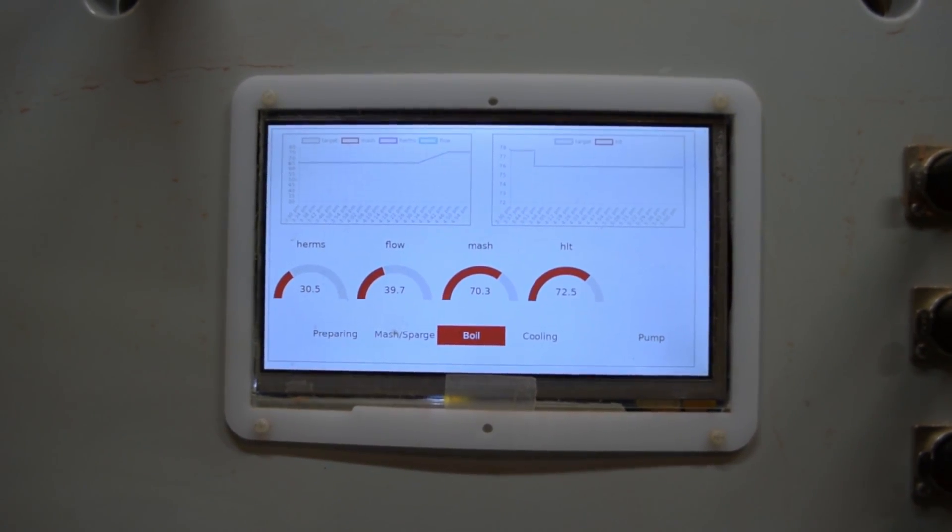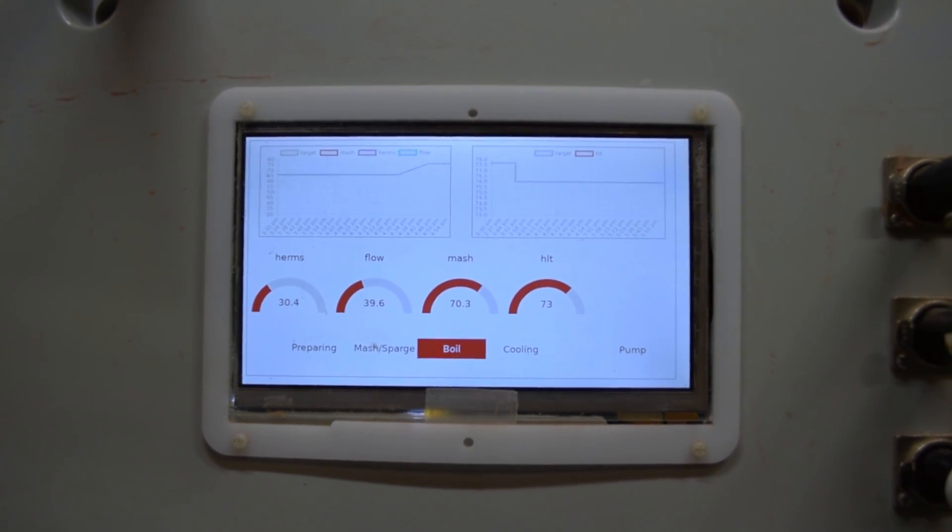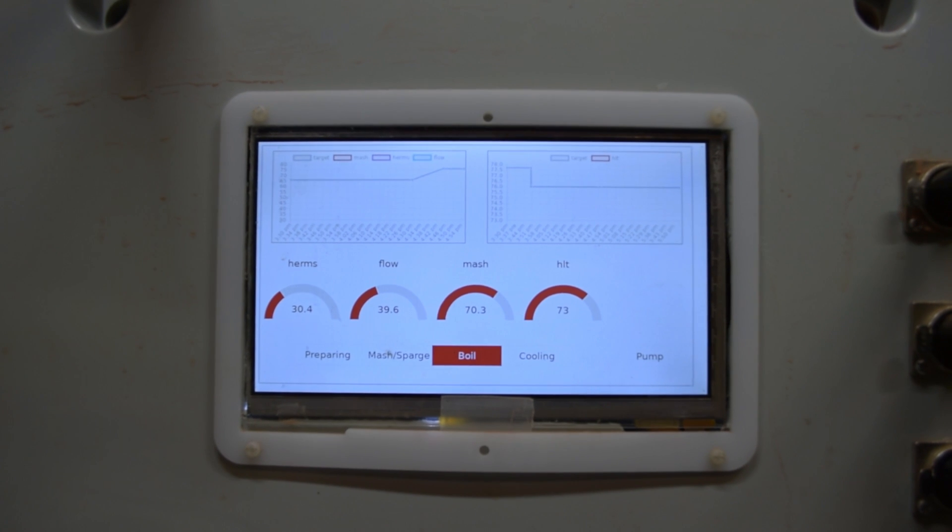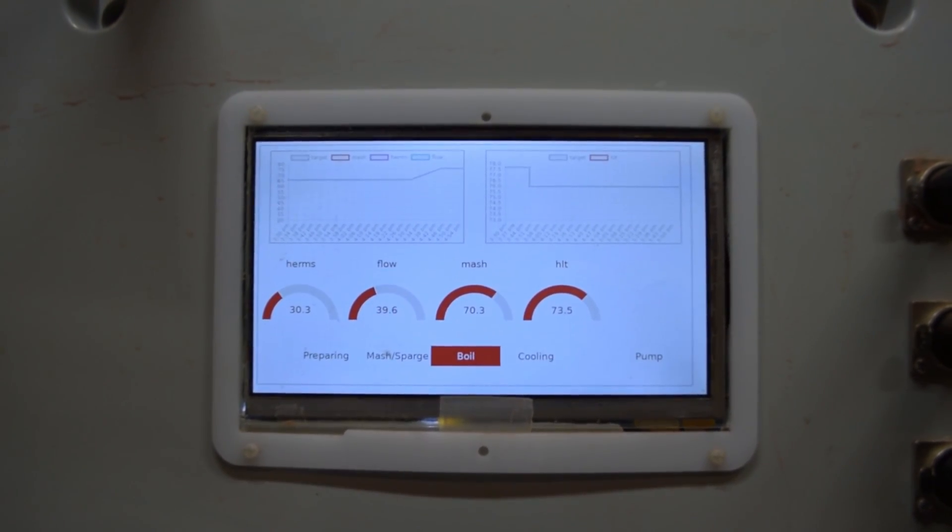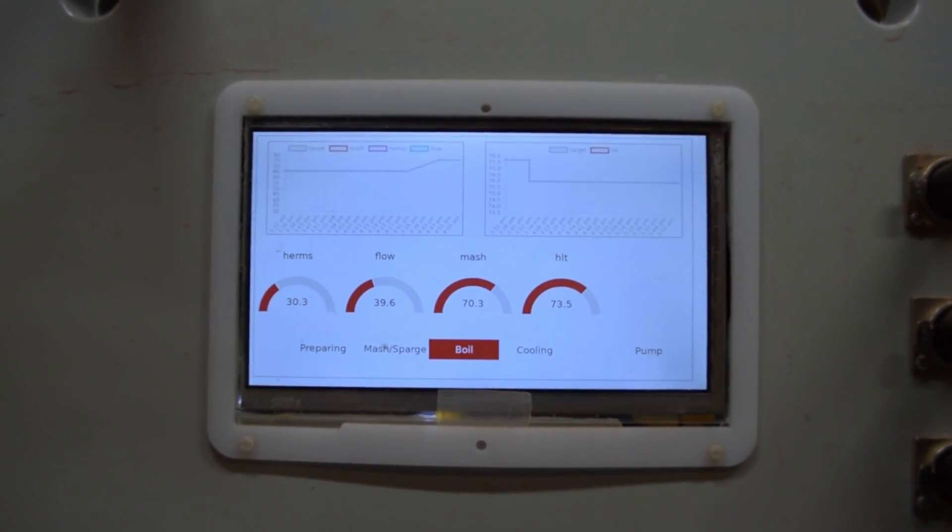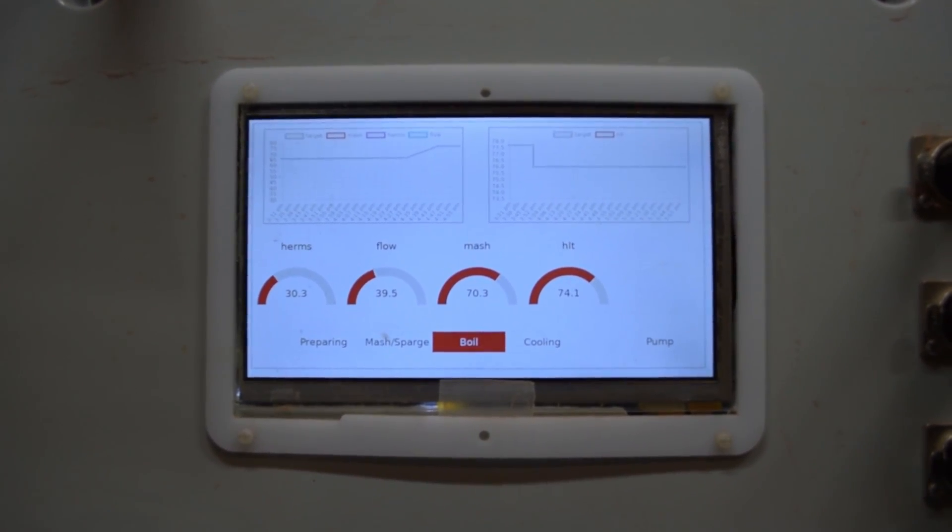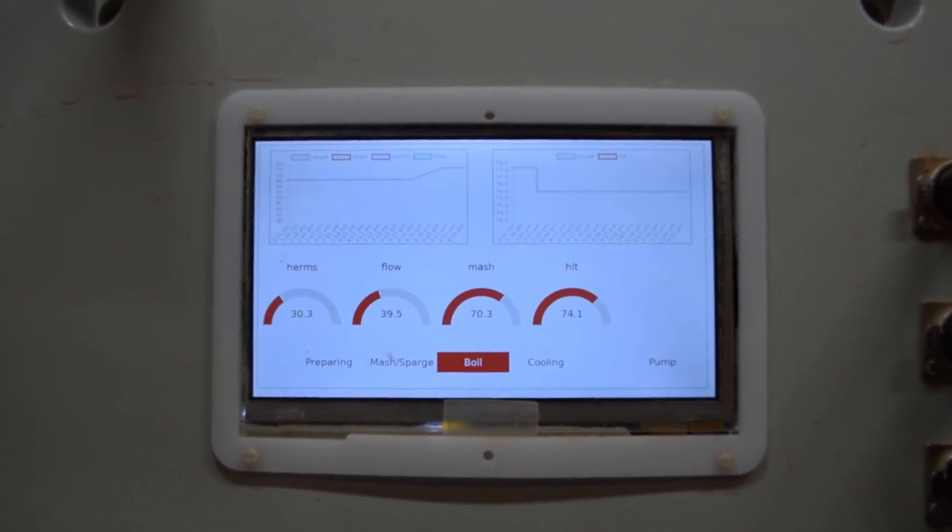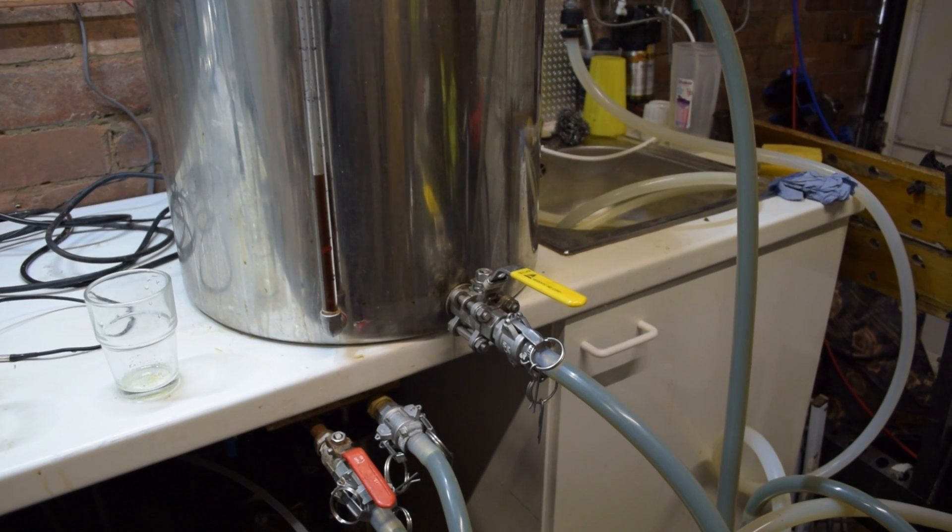This means I have the boost - the second element is completely on all the time, and the one that's under control of this system will stay on until we get to about 96 degrees, at which point it will cut out and leave just the other element running. The idea here is to get it up to temperature as quickly as possible with both elements, and one element is plenty to maintain a good rolling boil.